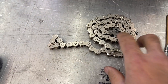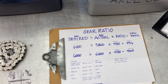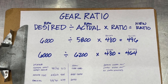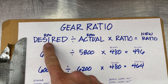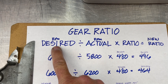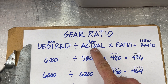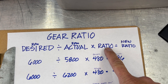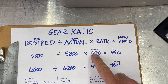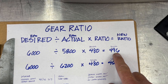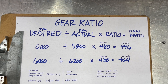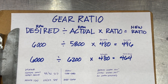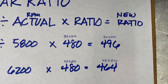We have a piece of chain here too that we'll get to in a few minutes. When we go to our gear ratio, this is one of my favorite formulas. You put your desired RPM — which is around 6,000 — and you divide it by your actual RPM, which is 5,800, and then you multiply it by your gear ratio, which we're starting with a 480. That gives you the new ratio. In our first example, we're at 5,800 and we want to go up 200 RPM, so times the 480 gives us a new gear of 496.